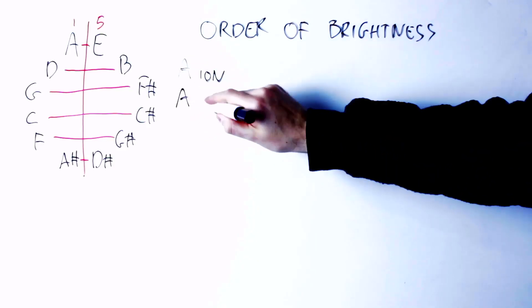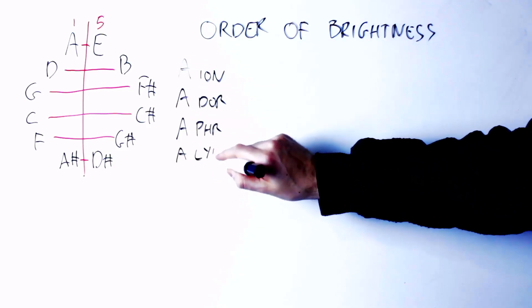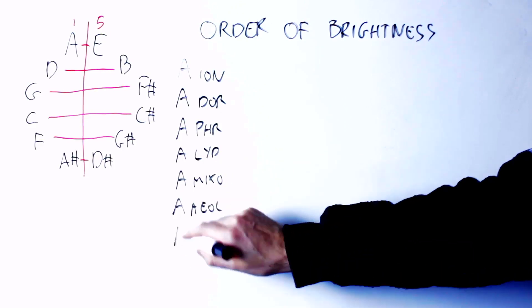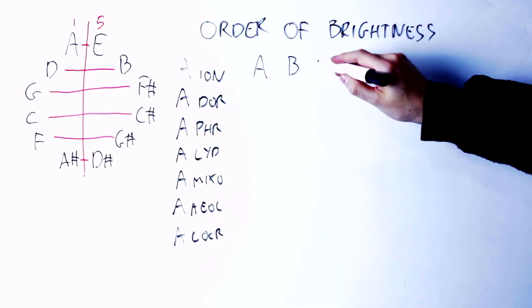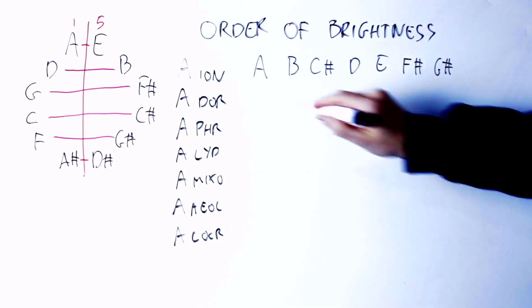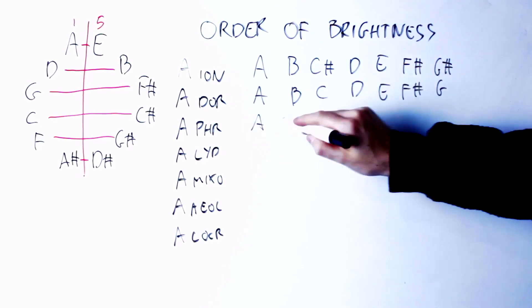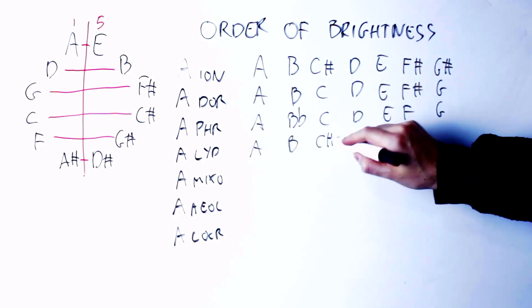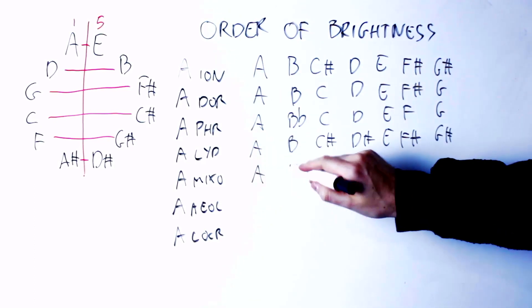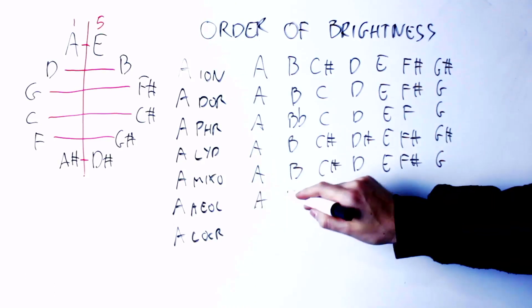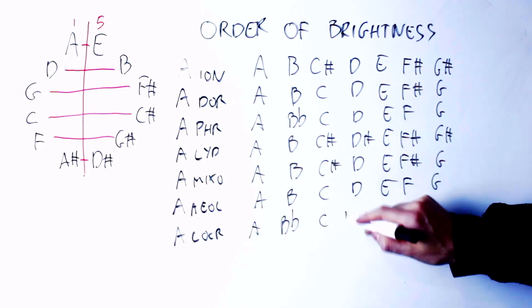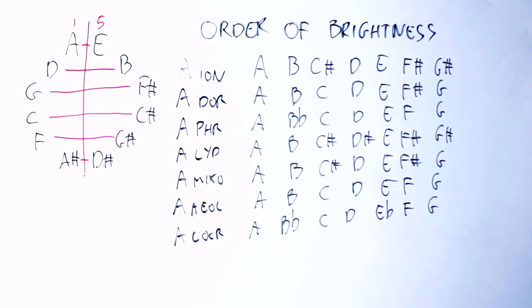The basic idea here is to take all the seven modes of the major scale and write all of them, but from the same root. That is, I'm going to write A Ionian, A Dorian, A Phrygian, A Lydian, A Mixolydian, A Aeolian, and A Locrian. So I have all the modes from the same root, and now I can see the difference between those modes.